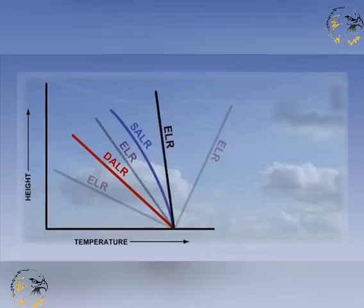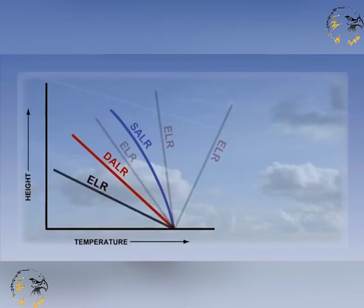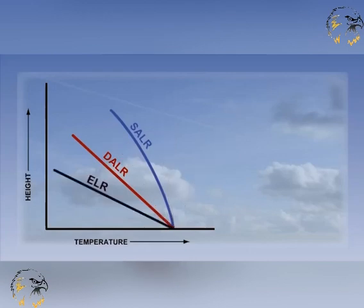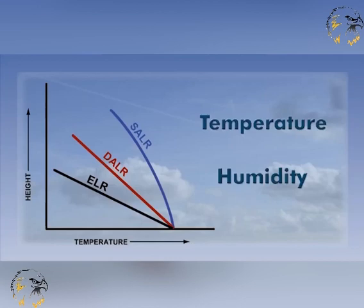The position of the ELR in relation to the other two lines, namely the DALR and the SALR, determines how we classify the stability of the atmosphere, as you might expect. Because we are considering both the DALR and SALR, the temperature and the humidity have a say in this classification.